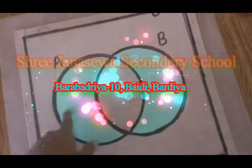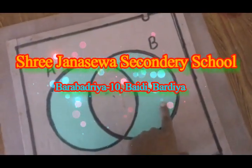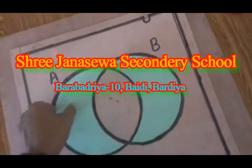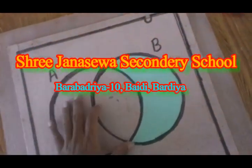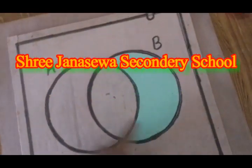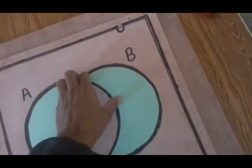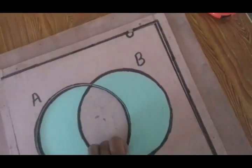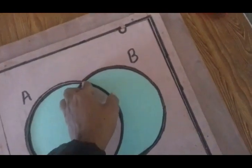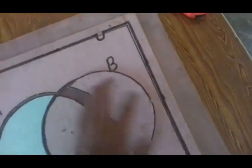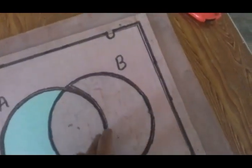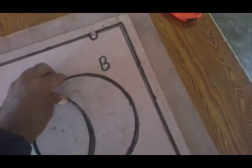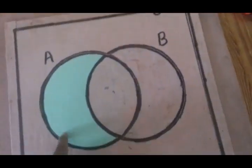We know this B only, A union only B and this is only B. We know. And this is only A.